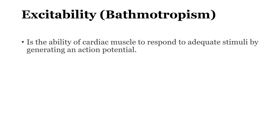The property of excitability of the cardiac muscle means that the cardiac muscle is able to respond to adequate stimuli by generating an action potential. The cardiac muscle cells have the ability to generate their own impulses, and when this impulse reaches a certain threshold level, it becomes an adequate stimulus which is able to generate an action potential. The ability of the cardiac muscle to respond to this adequate stimulus by generating an action potential is known as excitability.